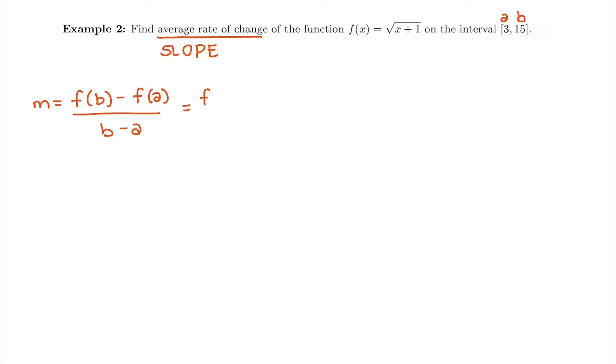So to plug into this formula, I would do f(15) minus f(3) all over 15 minus 3. So the first task is to figure out what is f(15). We can grab our calculator or write out some side work to calculate this out. That means going into this original function and replacing x with a 15. So we're going to do the square root of x plus 1, which is really just 15 plus 1, which means the square root of 16. Square root of 16 is 4.